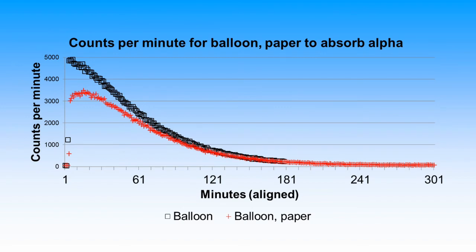The red data shows that the beta-gamma count rates were increasing for the first 20 minutes or so. This is consistent with the alpha decay of polonium-218. The profile of the majority of the curve is consistent with a half-life of about 30 minutes.